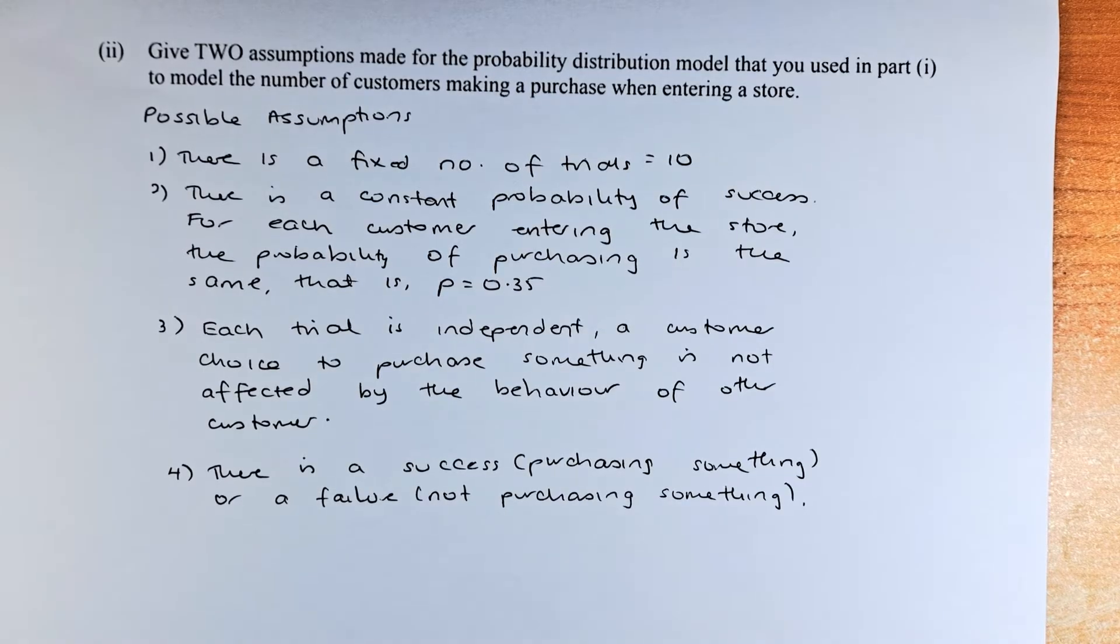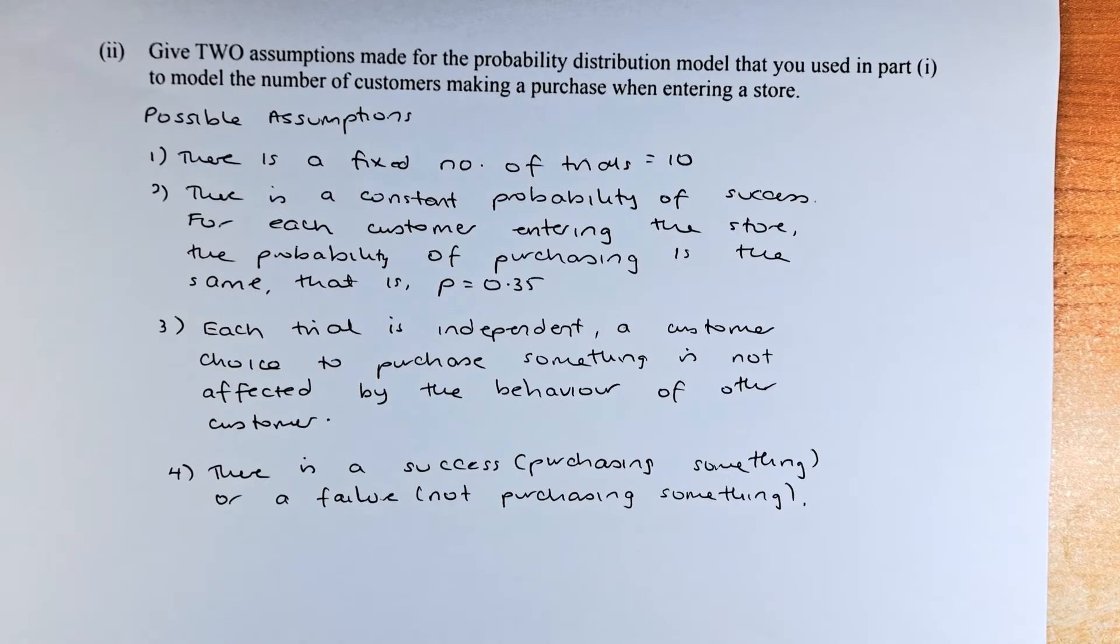First, there are a fixed number of trials. There are 10 trials in total. Second thing, there is a constant probability of success. For each customer entering the store, the probability of purchasing is the same. That is, probability of success is always 0.35.